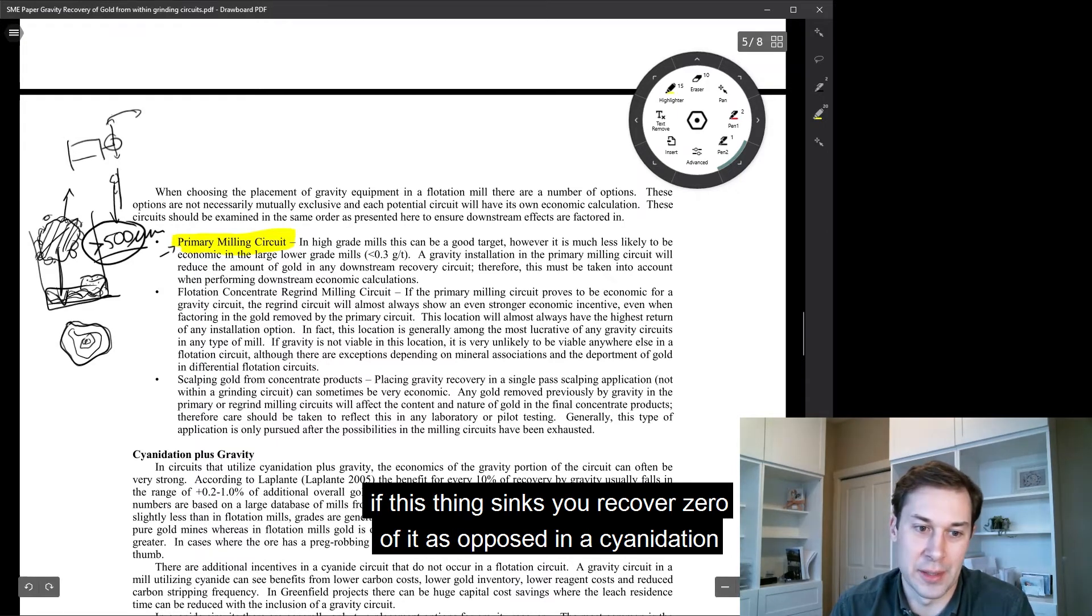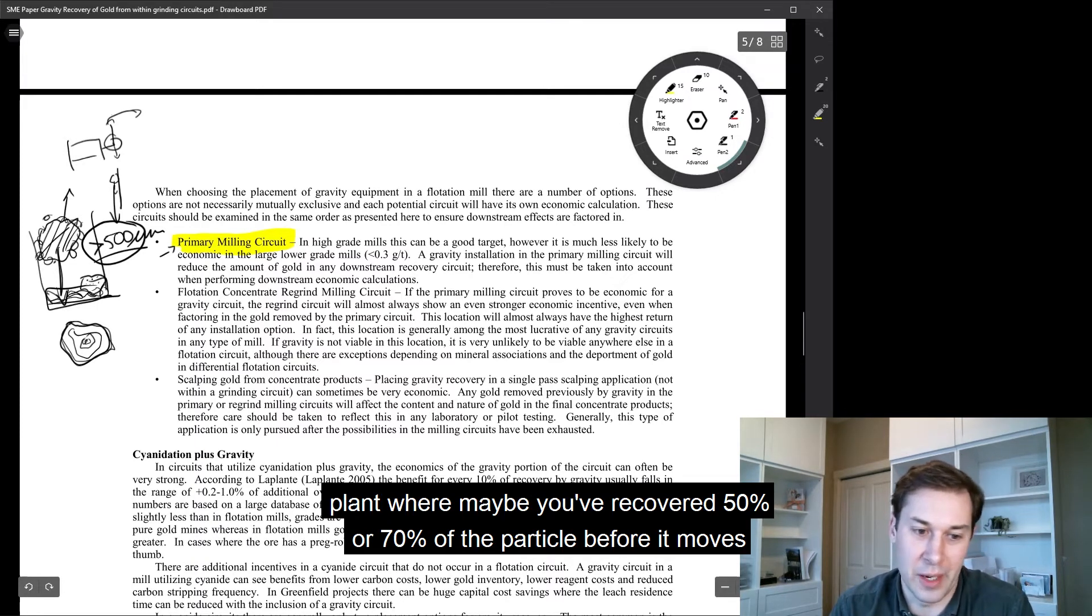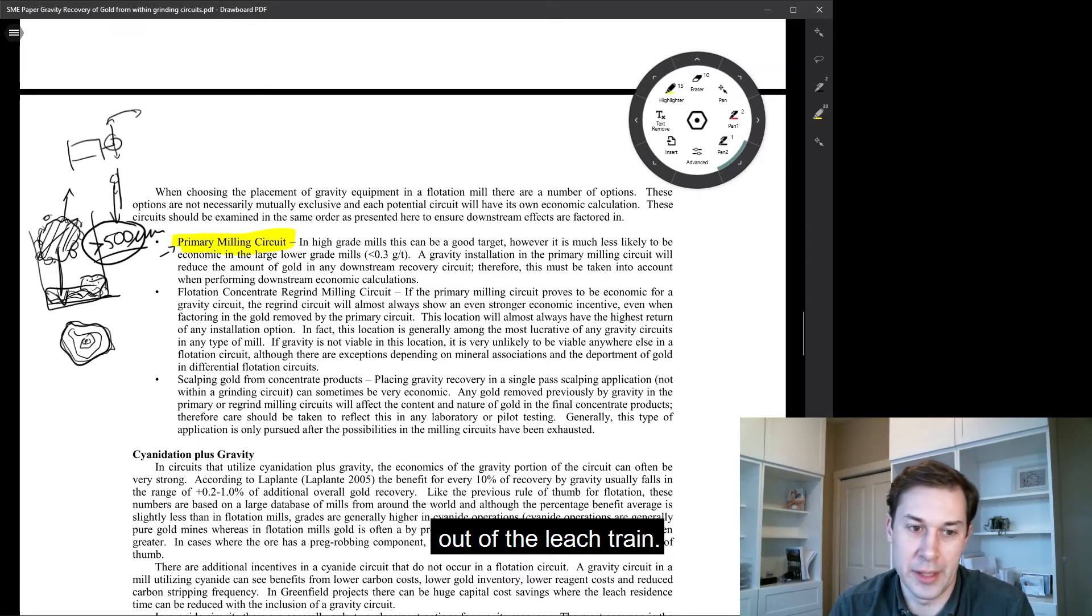Whereas in a flotation cell, this is going to be very binary. If this thing sinks, you recover zero of it as opposed to in a cyanidation plant where maybe you've recovered 50 or 70% of the particle before it moves out of the leach train.